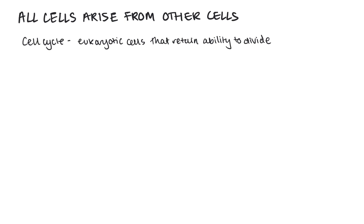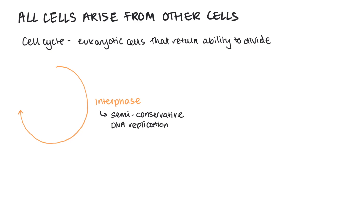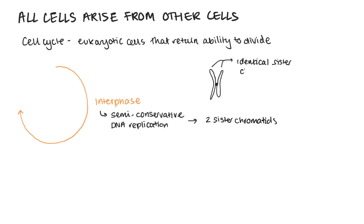There are three stages in the cell cycle. The first stage is interphase, which is the part that the cell normally spends the most time in. Normal cell activities happen here, but most importantly, in preparation for cell division, the DNA has to replicate semi-conservatively. This leads to our chromosomes appearing as two sister chromatids, which are identical and still joined to each other by a centromere. Because we're synthesizing DNA, we call this part of interphase S-phase.